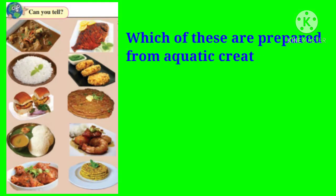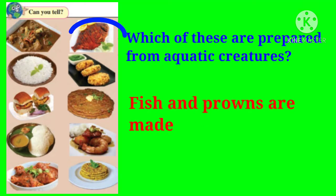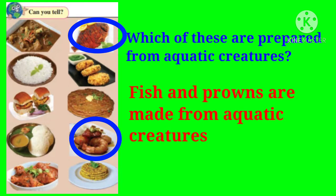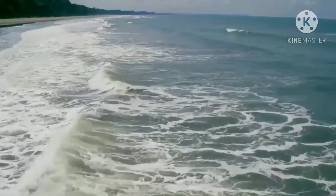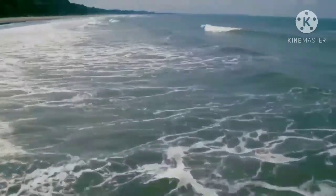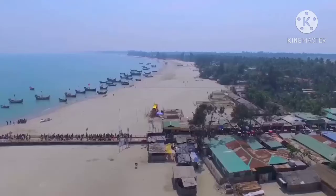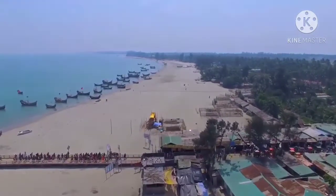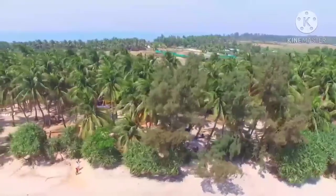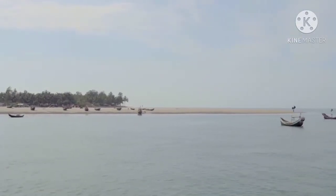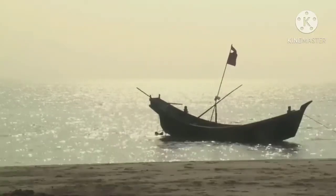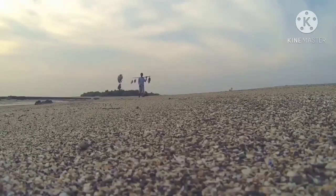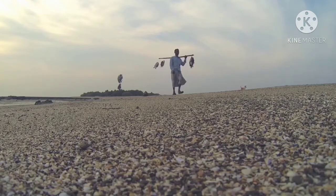Which of these are prepared from aquatic creatures? Fish and prawns are made from aquatic creatures. Many of us include fish in our diet. We get fish from rivers, lakes, and seas. The proportion of fish in seas is much greater than those in rivers and lakes.